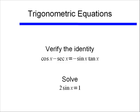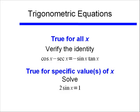So keep that in mind when you're solving trigonometric equations. Identities are true for all x, whereas equations are true for specific values of x.